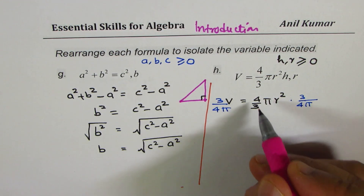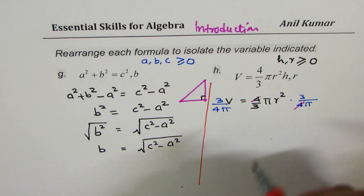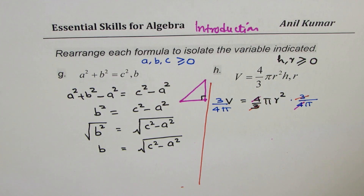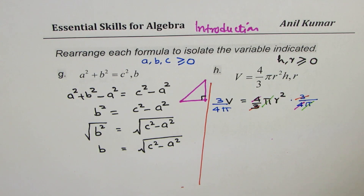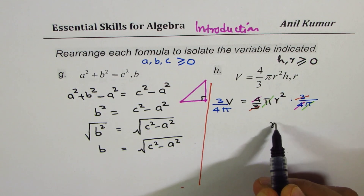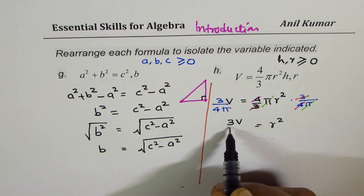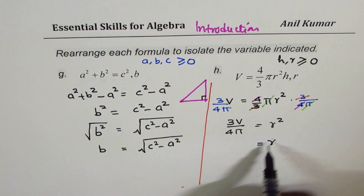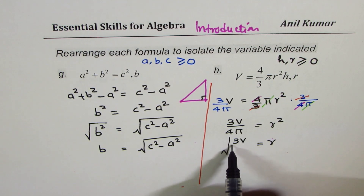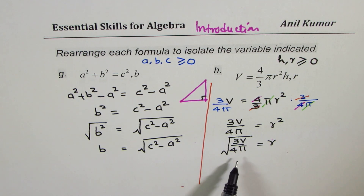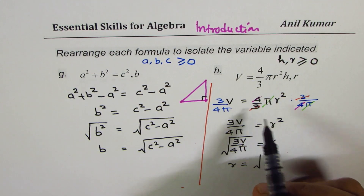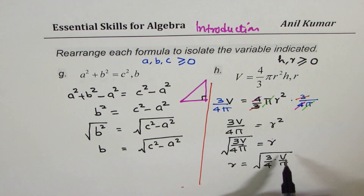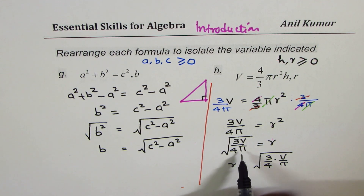Any equation is easy to rearrange to get the other part — it's not very difficult. We get r² = 3V/(4π). So what is r? r should be the square root of all this: r = √(3V/(4π)). We can also write r = √(3/4 × V/π). I've just taken r to the left side. That is how we isolate r.